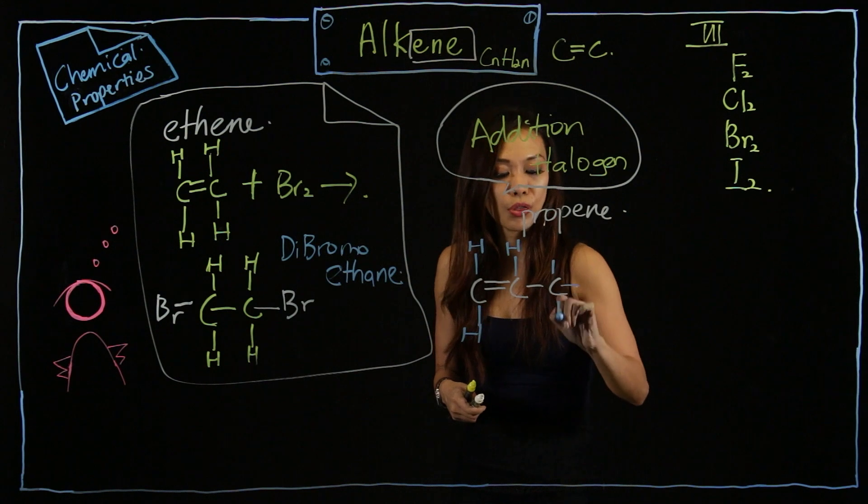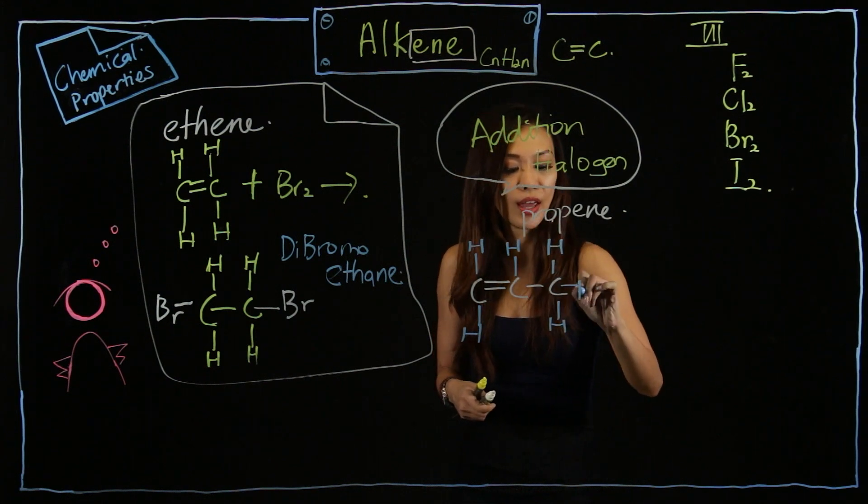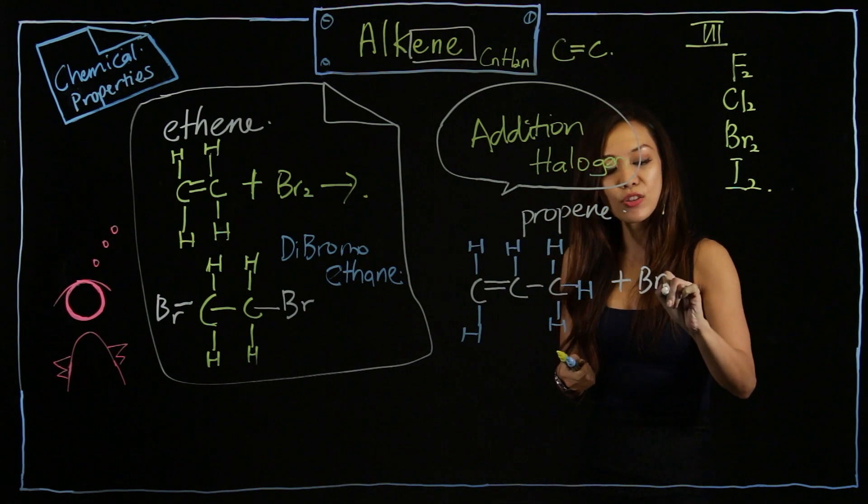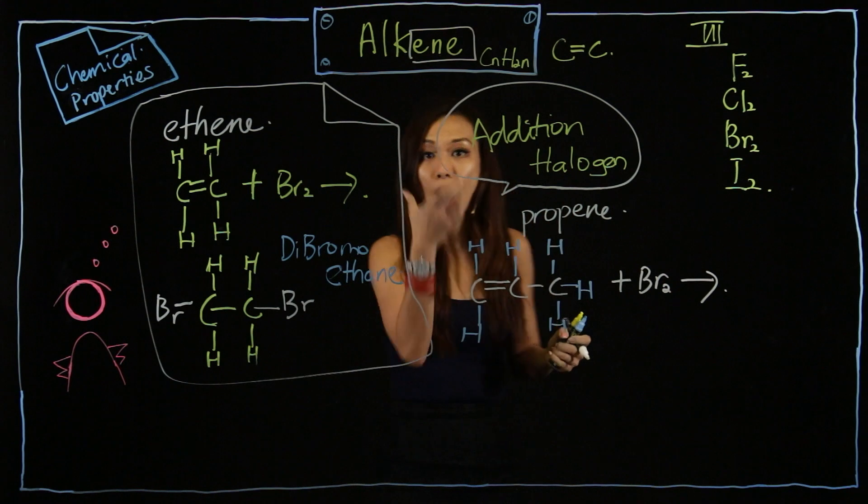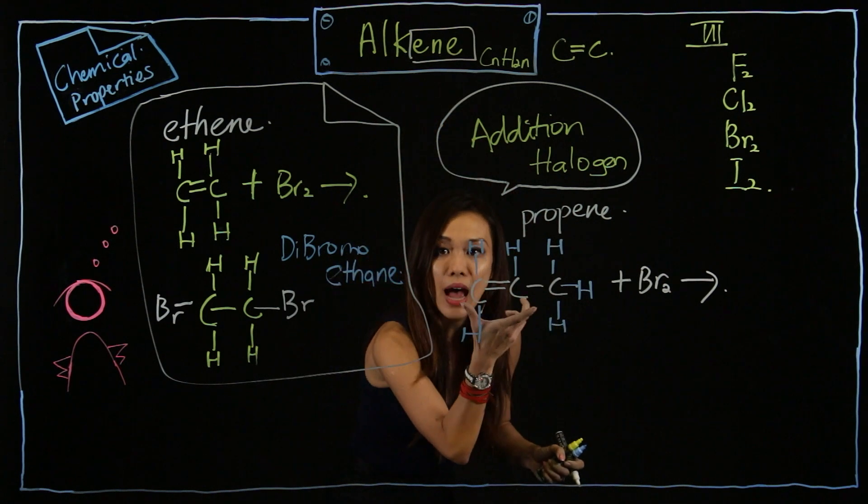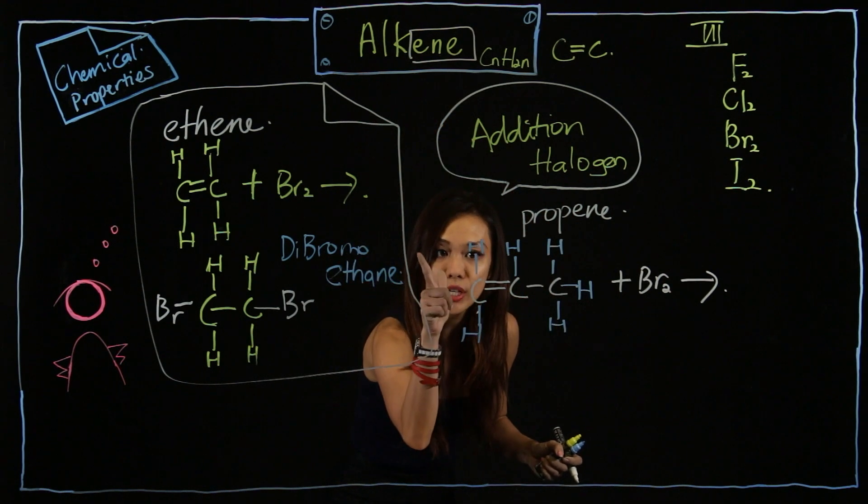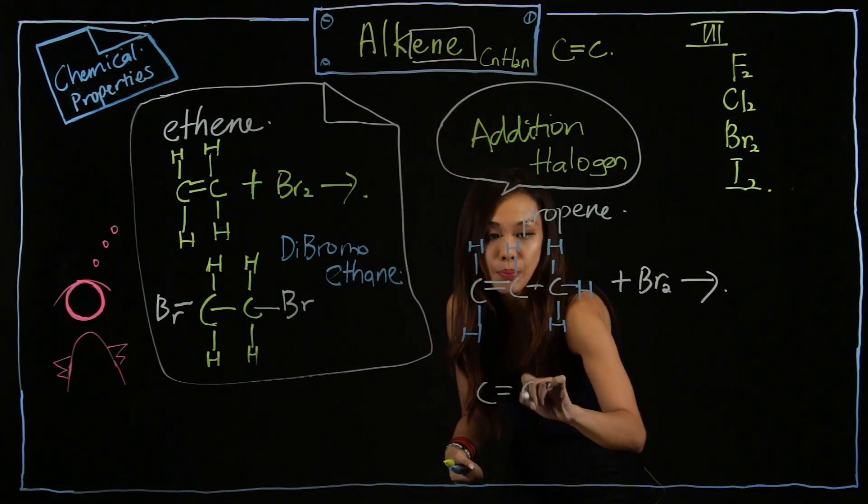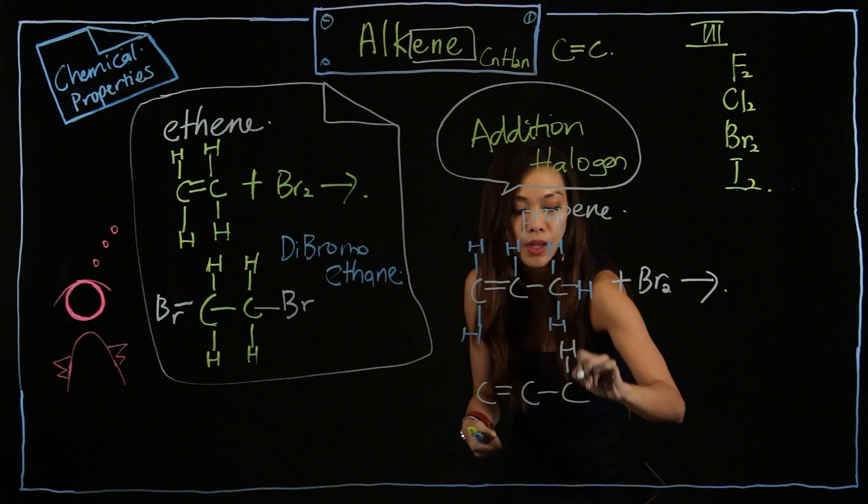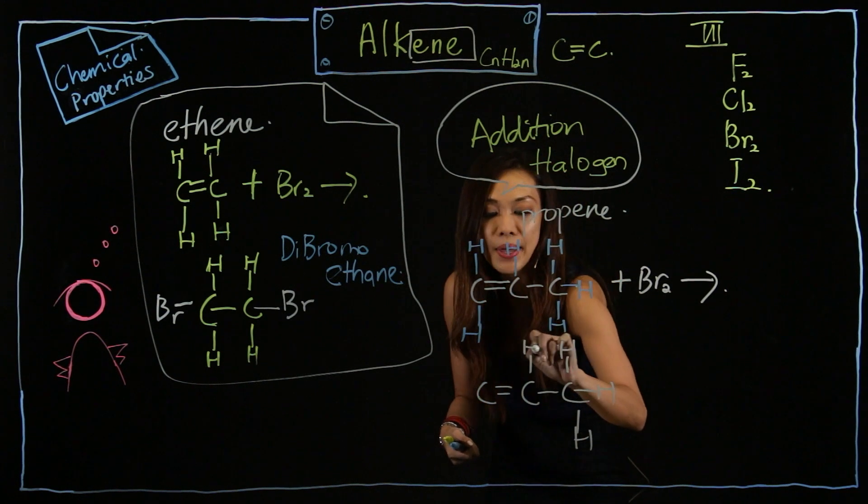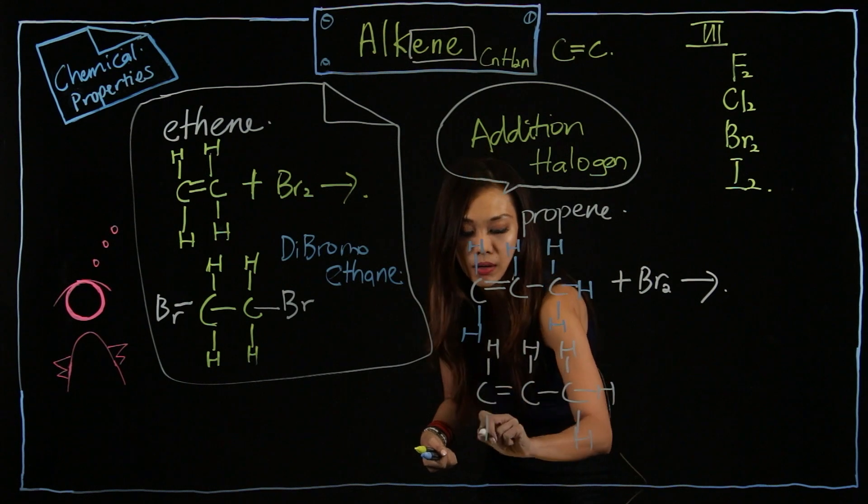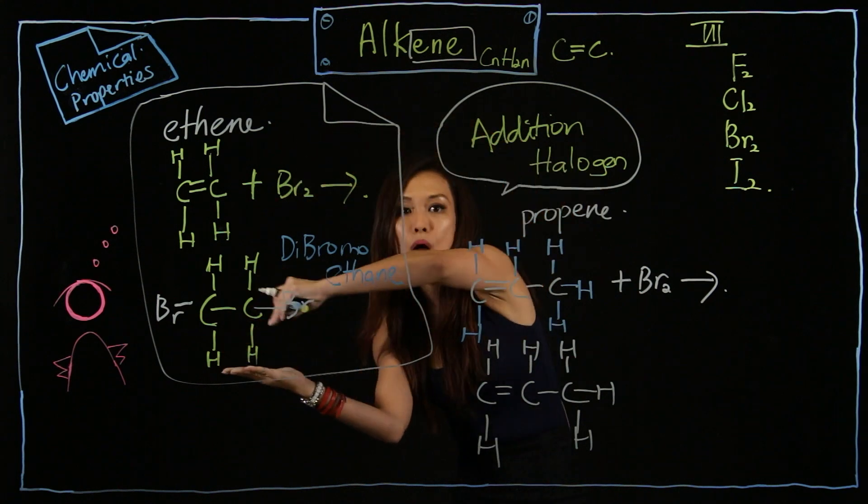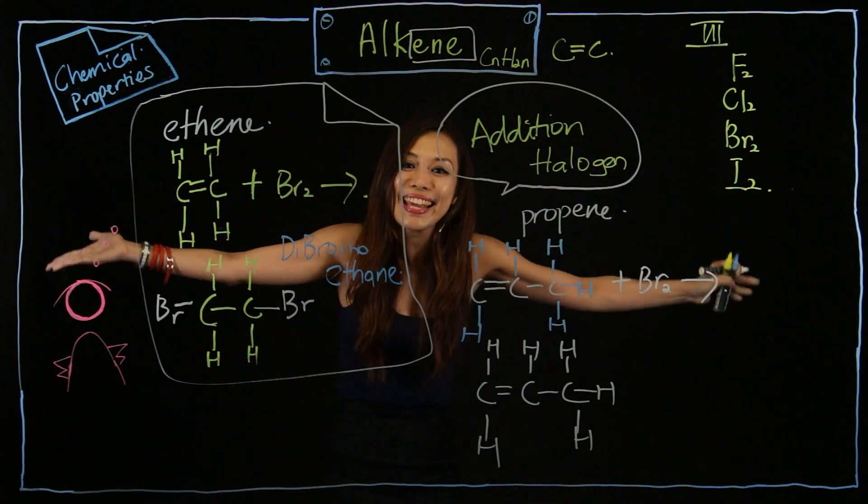1, 2, 3. H, H, H, H. Same thing. I will add a Br2. Now, I want your eyes to be on the double carbon bond. Okay? So, watch carefully. Okay? Watch. Don't miss this out. All right? Double carbon bond. H, H, H. Yes, I'm copying everything as per normal. I didn't make mistake. There is a double carbon bond here. Like I say, the double bond will open to become a what? Single bond.